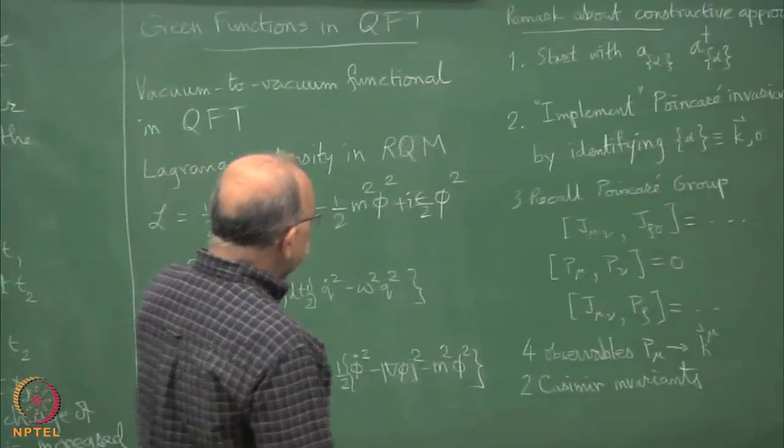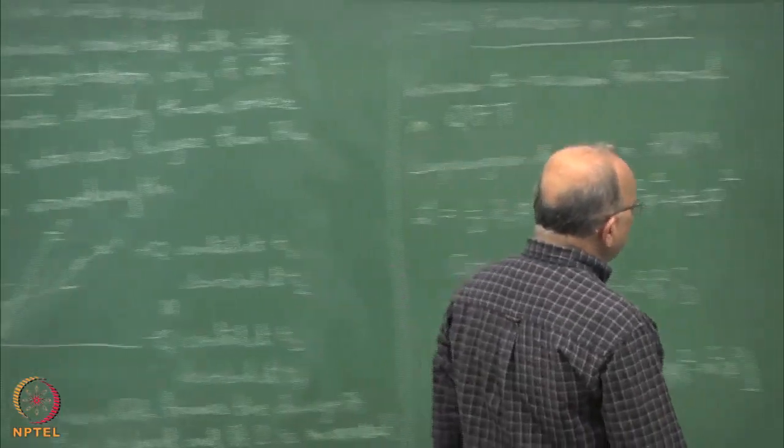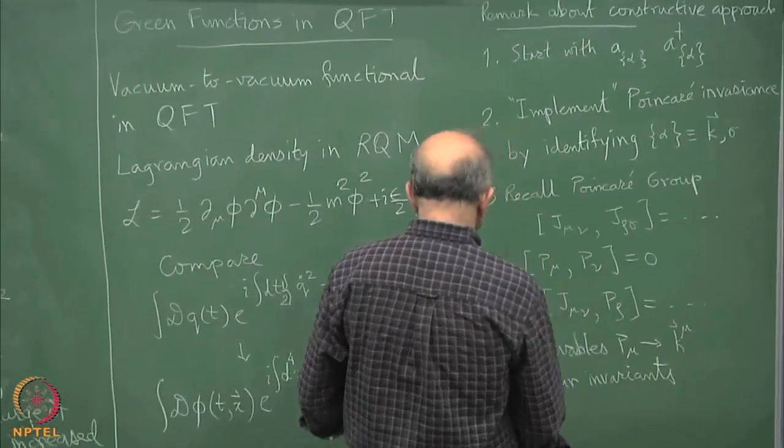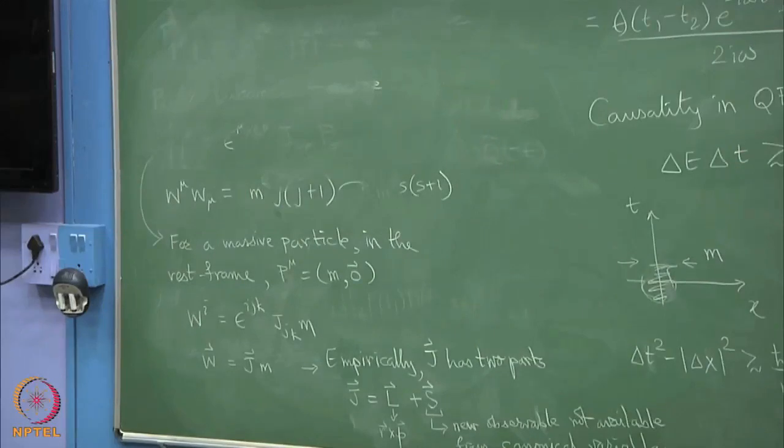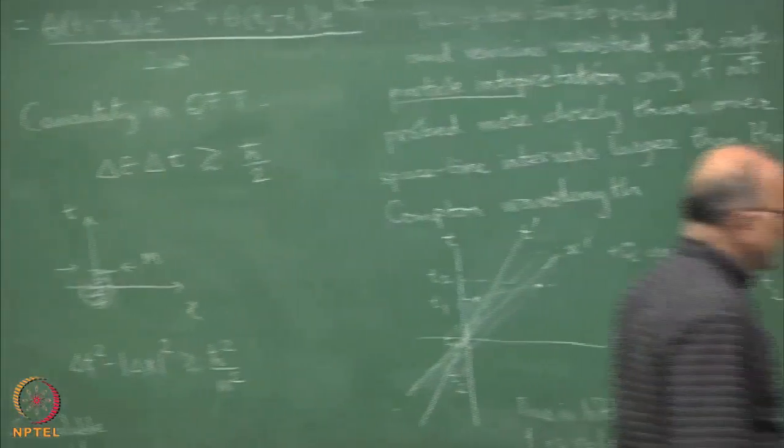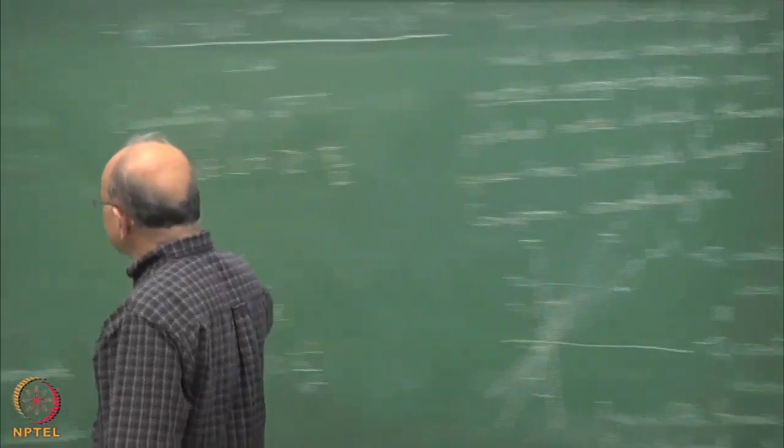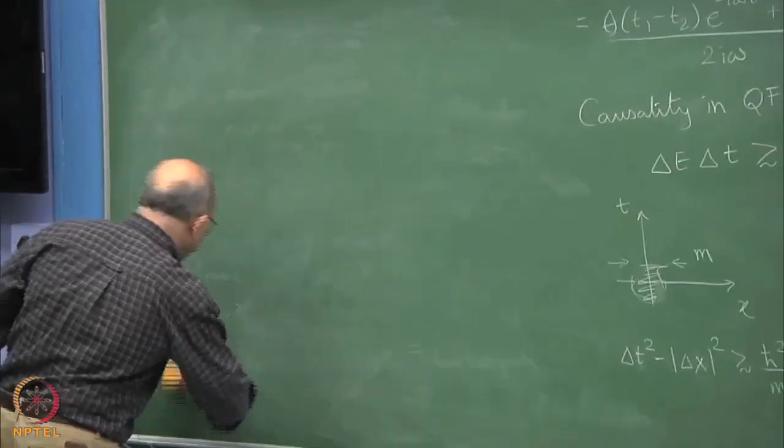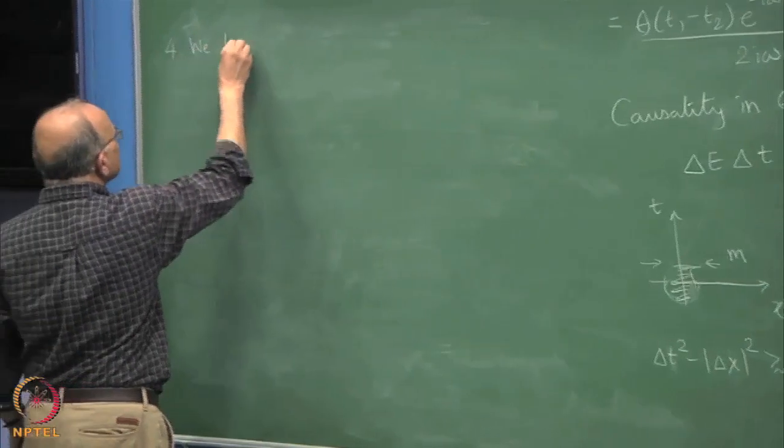The other Casimir invariant has value m squared s into s plus 1. The auxiliary not canonically obtainable but observed in nature observable is what is spin. In the constructive approach then you choose the a dagger to be like this and at this point you argue that you need to construct fields.